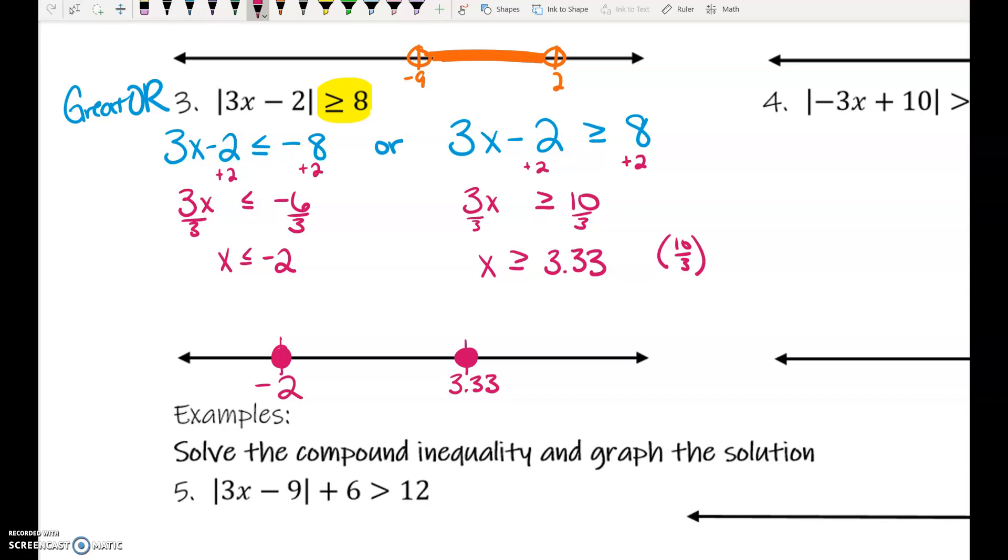Or inequalities point away from each other. X is less than or equal to negative 2. That one's going to be shaded to the left. X is greater than or equal to 3.3 repeated. That one's going to be shaded to the right.